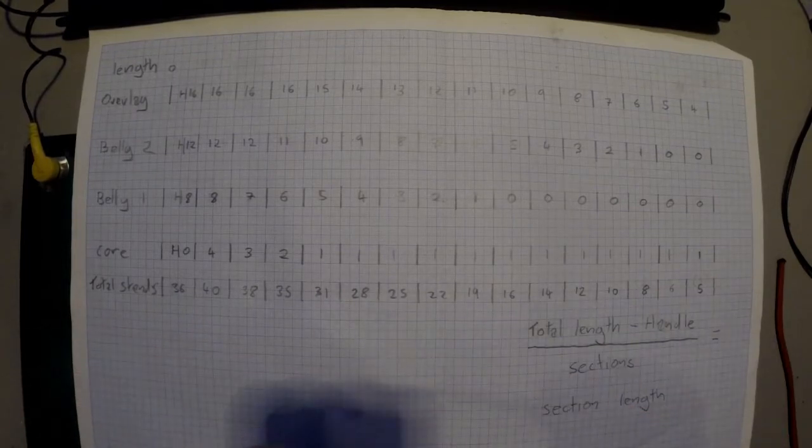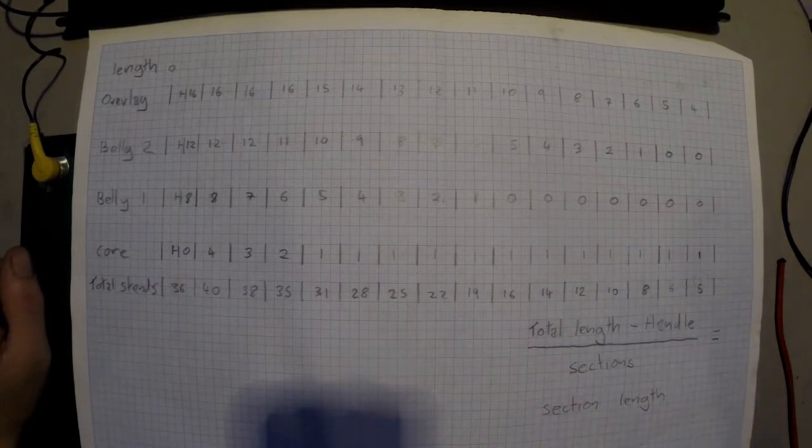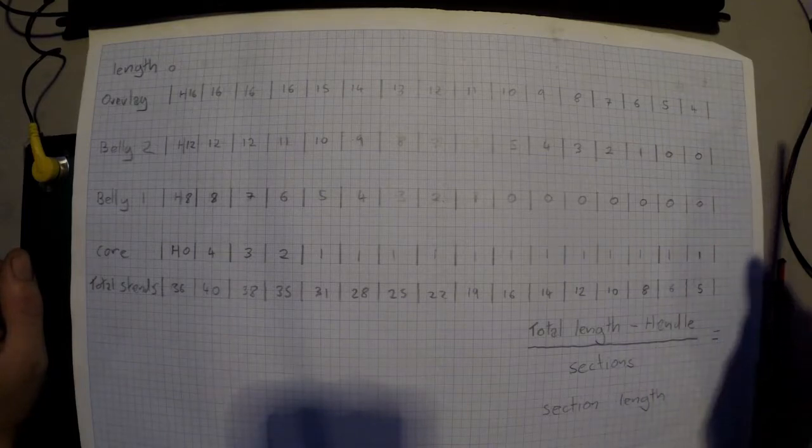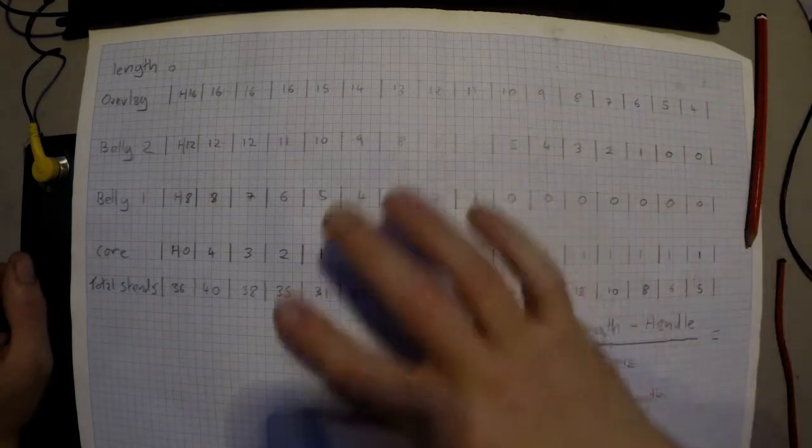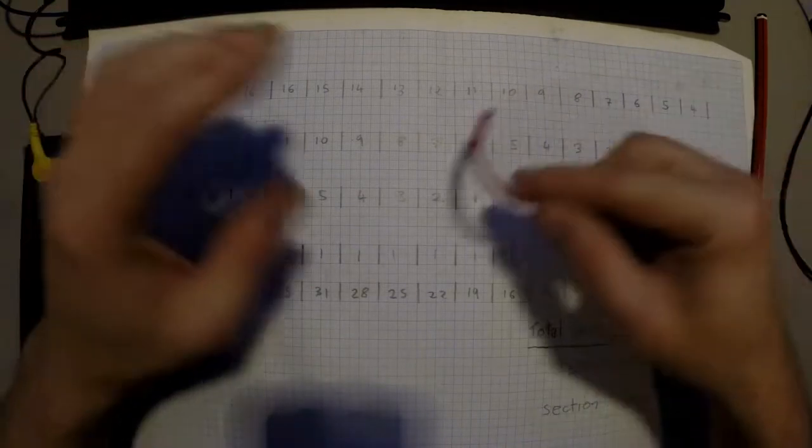So the whip I'm going to be making is a 16 strand and there's no lead in it. It's what's known as a naturally falling whip, so it's basically made entirely out of the cord. Now this table here will show you how many strands are in each different layer and where they drop out and all that sort of stuff.